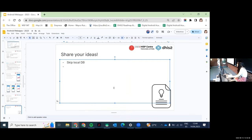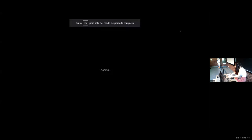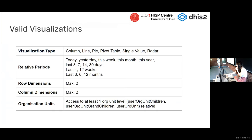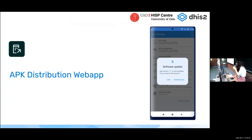Moving to the APK Distribution web app. The reason for developing this app is to provide some control over which version of the app is used in the field. Normally the most popular distribution channel is Google Play, and when a new version is uploaded, users may auto-update to versions you haven't tested or that introduce new UI changes you haven't trained users on. This is normally handled by an MDM system, but most implementations don't have MDMs — they're expensive, create dependencies, and aren't sustainable long-term. The APK Distribution app provides version control: you get time to test before deciding which version your users will use.